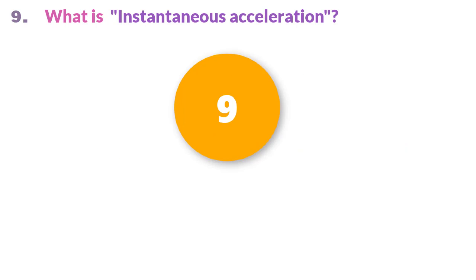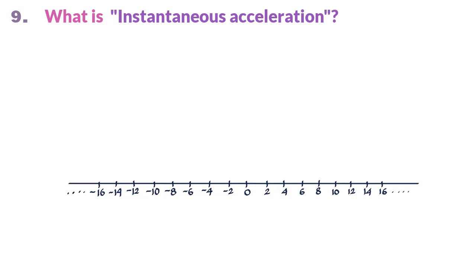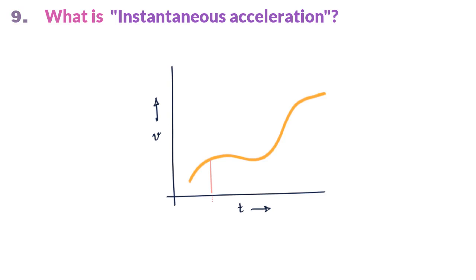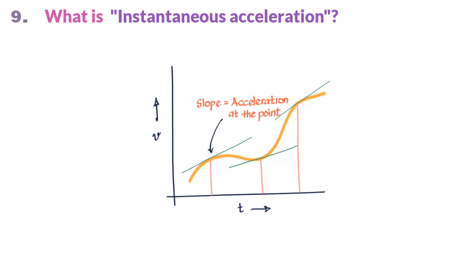Instantaneous acceleration is the acceleration of a particle at a given point in time, or the rate at which velocity is changing at that instant. It is written as a equals dv/dt. We can also say acceleration is the second derivative of displacement: a equals dv/dt equals d/dt(dx/dt) equals d²x/dt². On a velocity versus time graph, the slope of the curve at any point gives the instantaneous acceleration at that point, and you can see the acceleration is continuously changing in a curved graph.